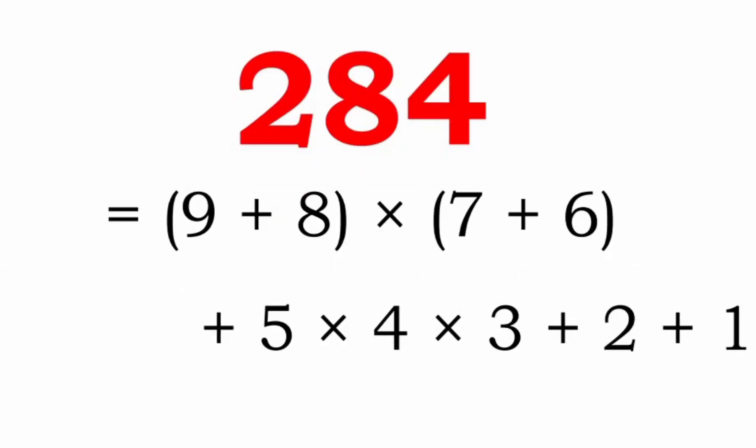The next representation of 284 is equal to 9 plus 8 into 7 plus 6 plus 5 into 4 into 3, plus 2 plus 1. Here all the digits from 1 to 9 are used, and that also in decreasing order — we start from 9 and end with 1.